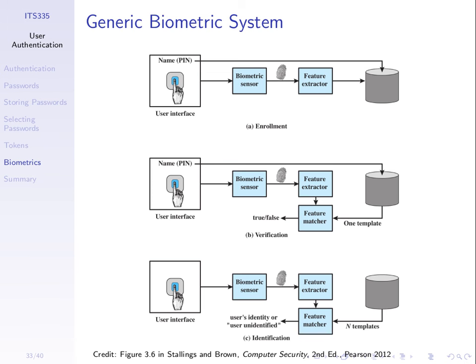With respect to the matching, the algorithm compares the features extracted against one of the templates and determines a score — how close the match is between the supplied one and the enrolled one. If the score is above some threshold, they are authenticated. If it's below the threshold, then they're not authenticated.